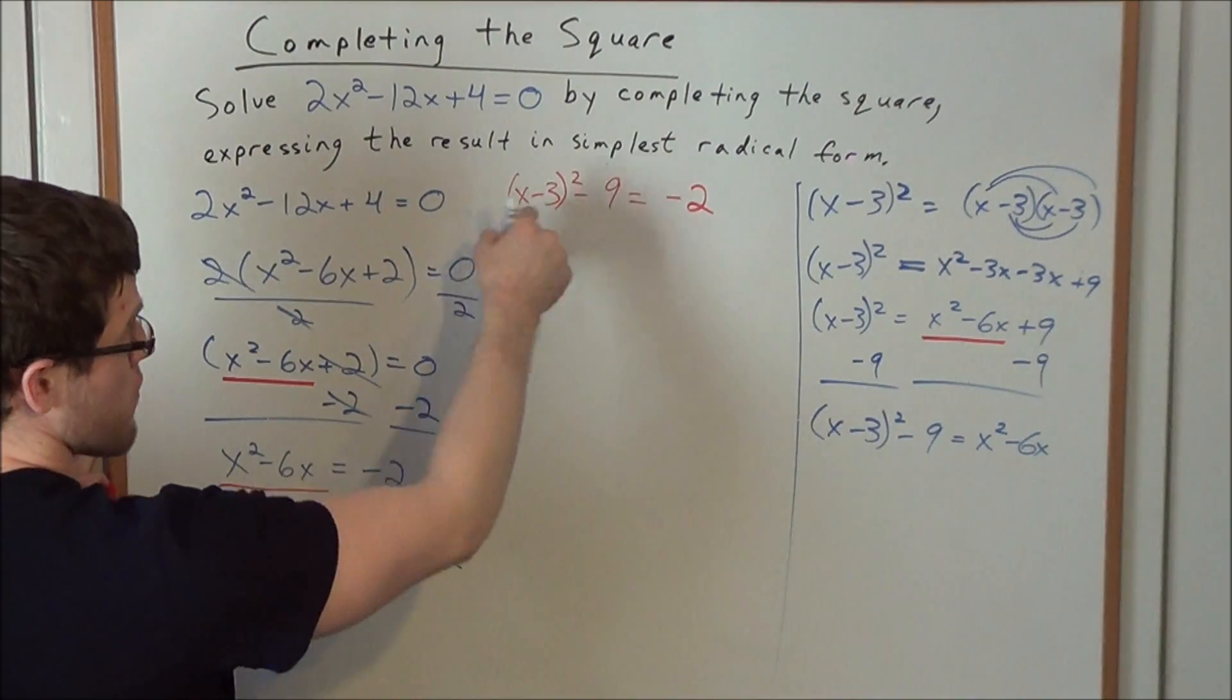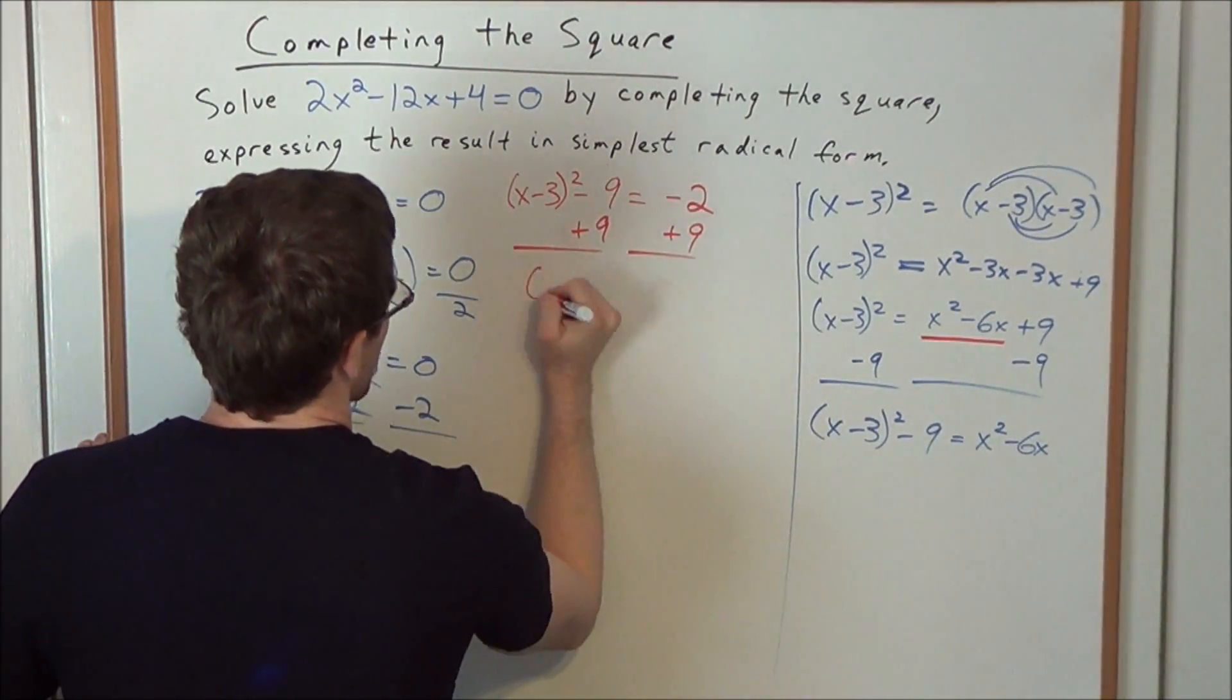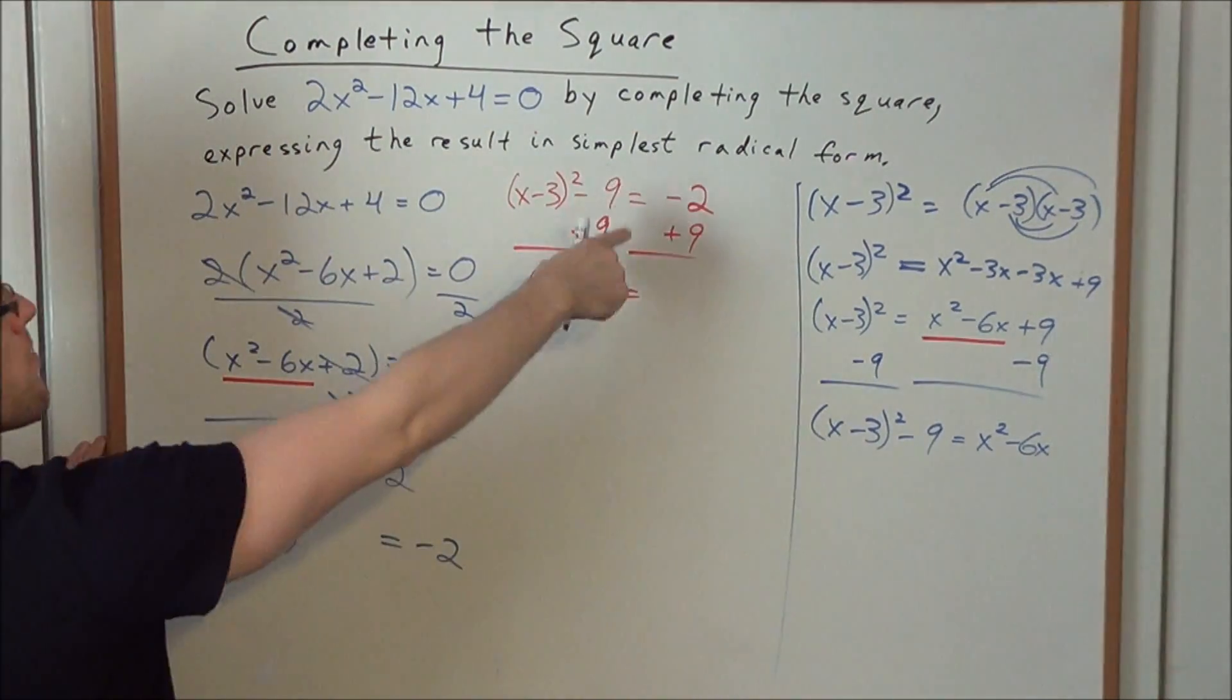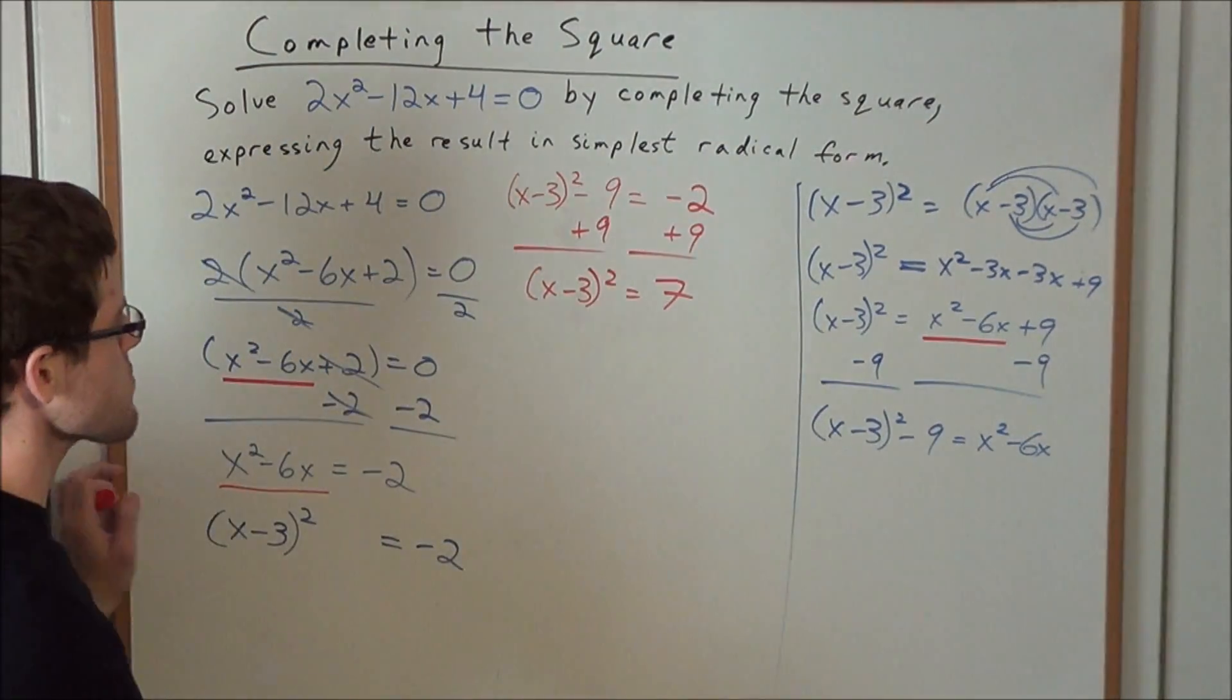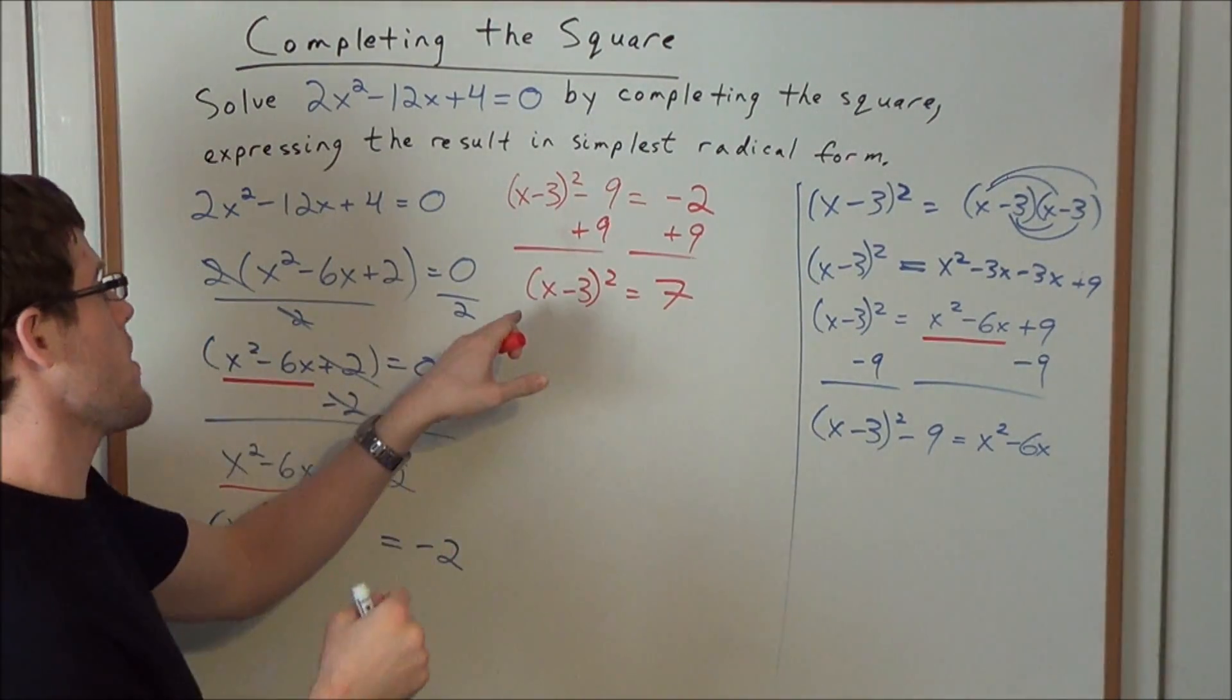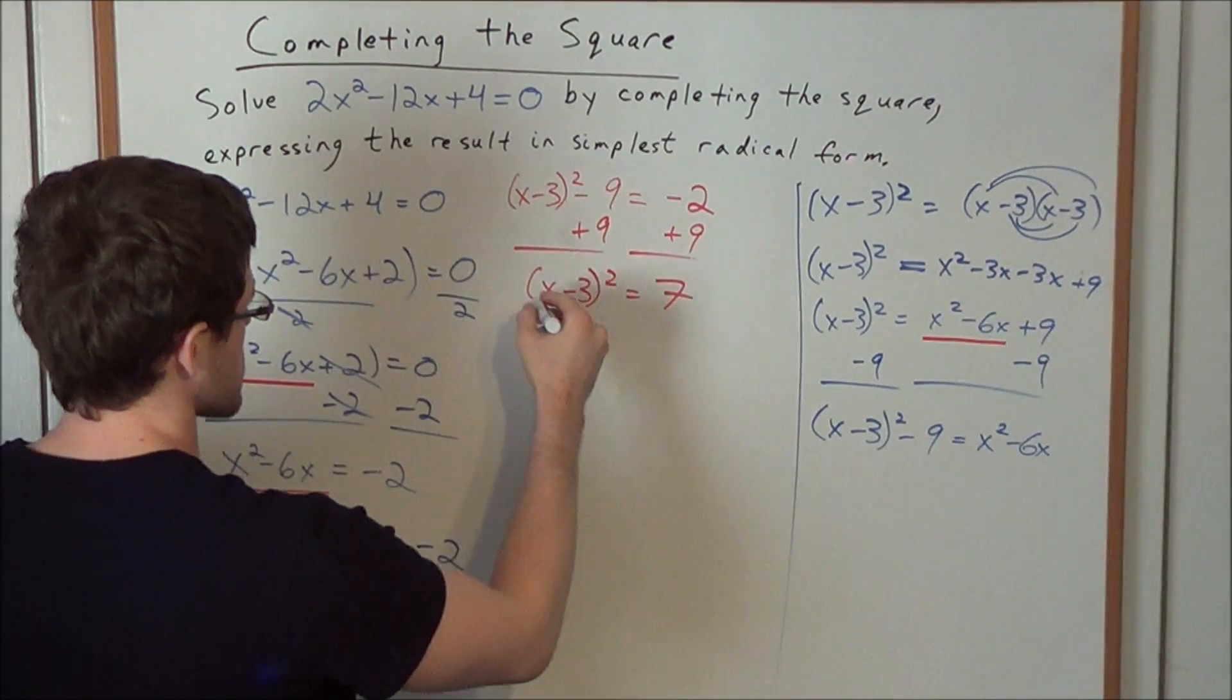So now to solve for x, all we need to do is we add 9 to both sides, and we have (x - 3)² = now a -2 and a +9 is equal to a +7. To get x alone right now, x is being squared, 3 is being subtracted from x and that quantity is being squared. So to get rid of this square, we go ahead and we find the square root of both sides.